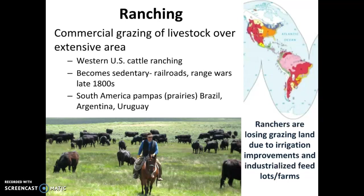Industrialized feed lots and feed farms — factory farms — are starting to take over. People see how much work ranching is and how much land it takes, so it's easier to put cows, pigs, or whatever into large industrial feed lots, force-feed them, keep them sedentary so they gain weight and bulk up. However, people are becoming more concerned about the ethical raising of animals and what they're eating — grass-fed versus grain-fed cows and that type of thing.